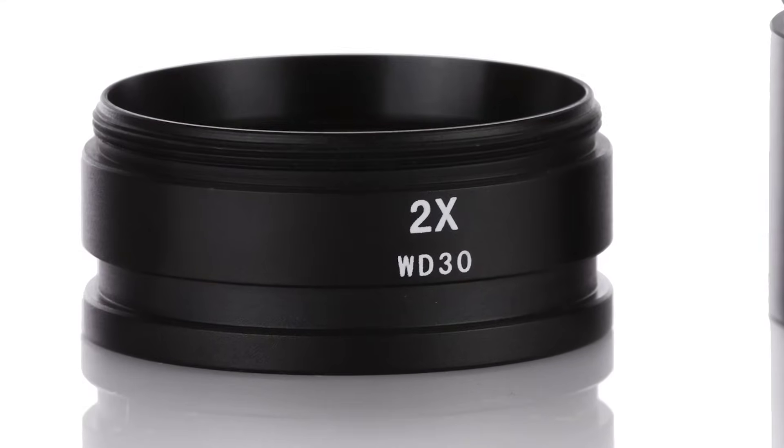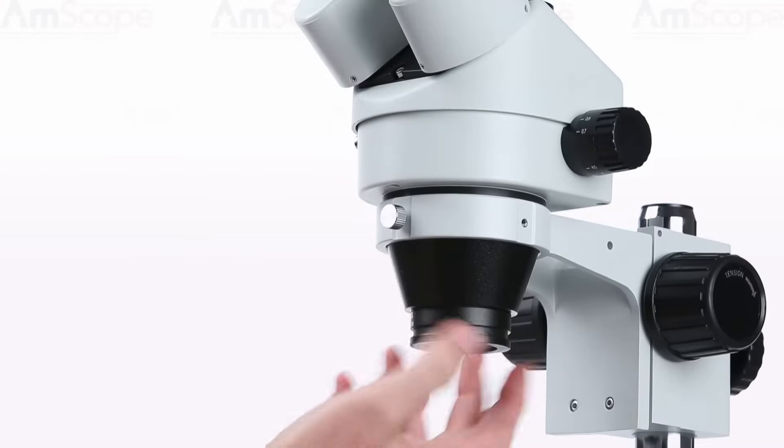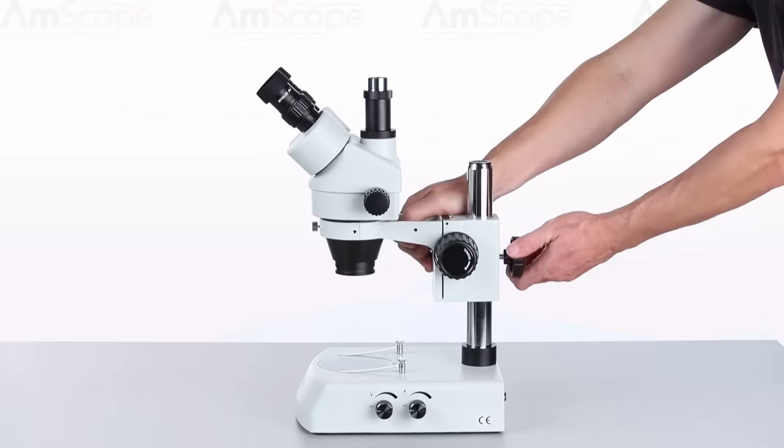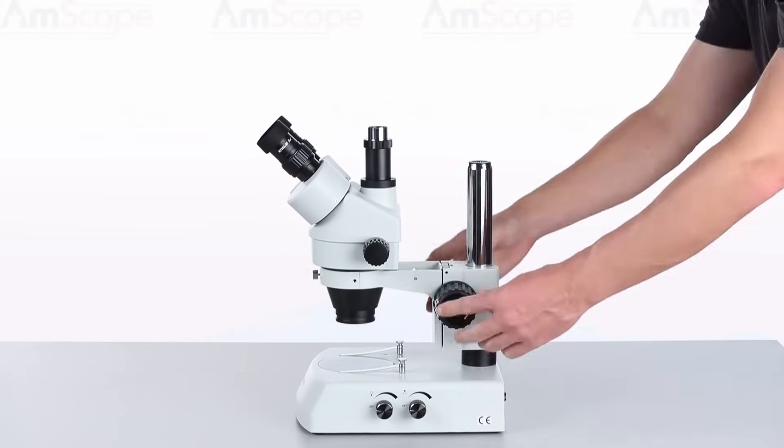The 2x Barlow lens will double your magnification. The increased magnification will require a shorter working distance, so the focusing rack will need to be lowered.